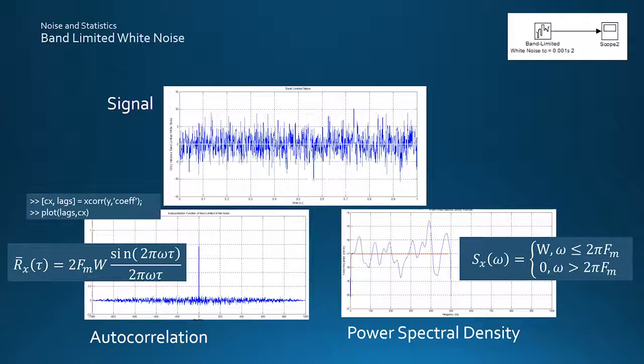These MATLAB plots show a sample of band-limited white noise of unity variance now, rather than infinity, and its associated correlation and power spectral density functions. The autocorrelation still shows a simple spike at zero lag, because the cutoff frequency is much higher than the rest of the system, although the spike is not now infinitely tall, and is normalized to unity by the coefficient parameter in the MATLAB cross-correlation function.